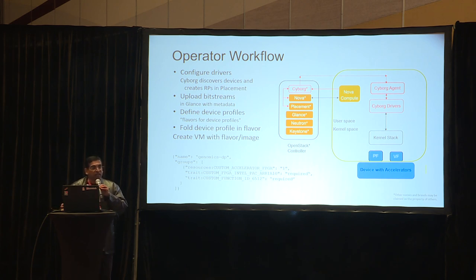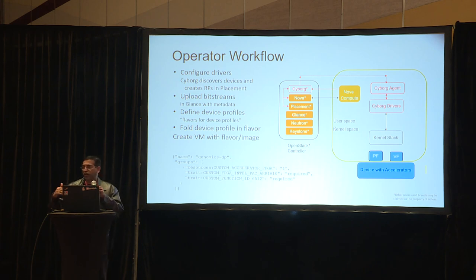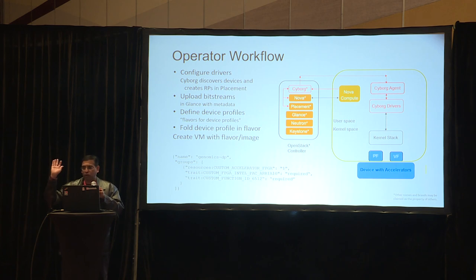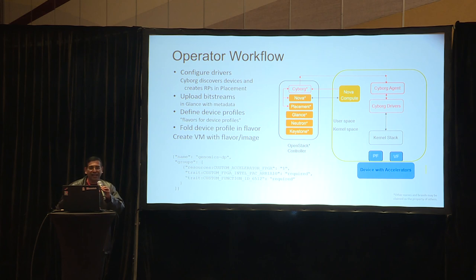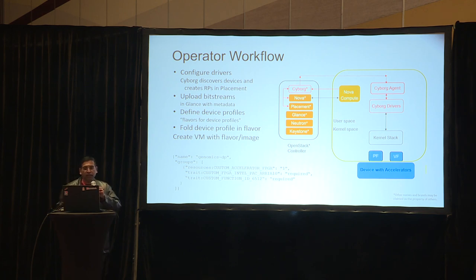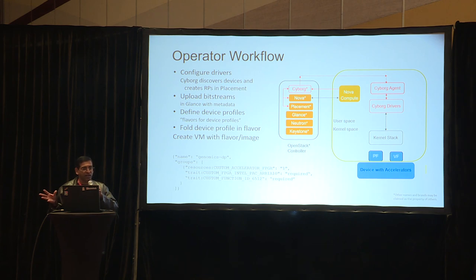Then you define something called a device profile. Normally in Nova you have the notion of a flavor, and in the flavor you define extra specs for additional resources. We took the same concept and factored them out, because putting everything in flavors causes a flavor explosion. Operators typically use flavors for billing and accounting, so we don't want too many flavors. We put them in a separate thing called a device profile. Essentially it looks like extra specs with resources and traits, except instead of plain key-value pairs, it's in a JSON format that's easier to manipulate.